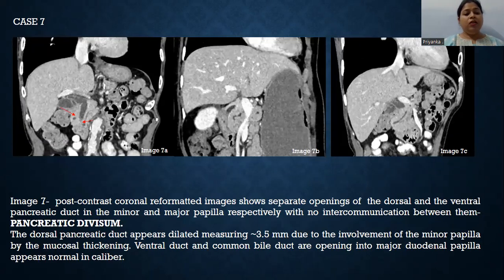Case number seven demonstrates pancreatic divisum. Post-contrast coronal reformatted images show separate openings of the dorsal and ventral pancreatic ducts into the minor and major papilla respectively, with no intercommunication between them. The dorsal pancreatic duct appears dilated due to involvement of the minor papilla. The ventral pancreatic duct and common bile duct open into the major duodenal papilla, which appears normal in caliber.